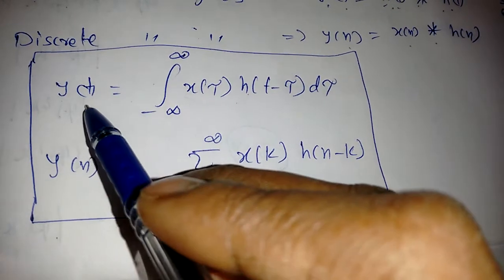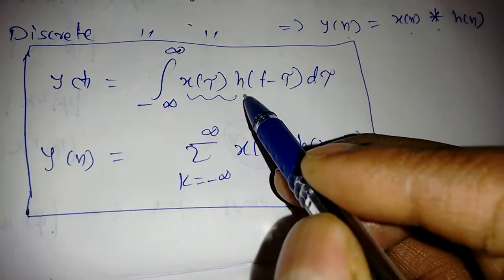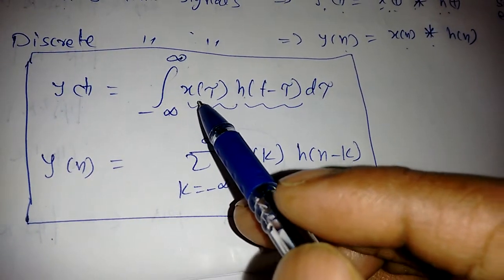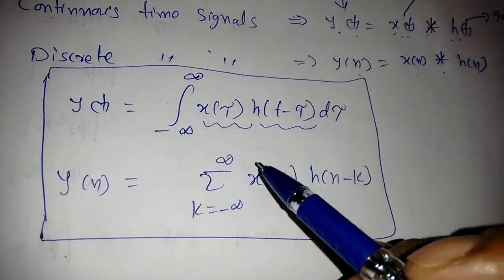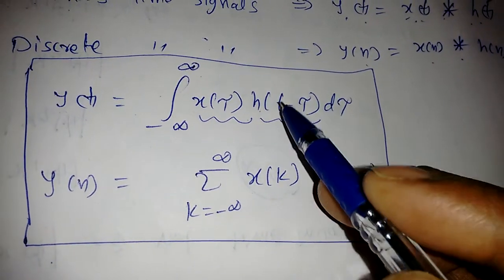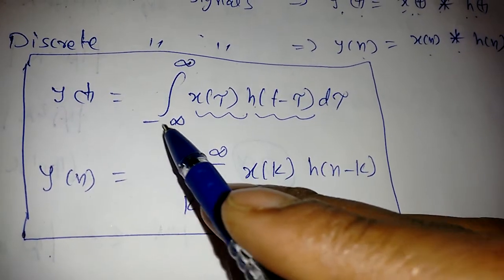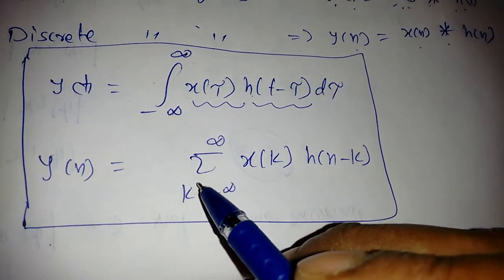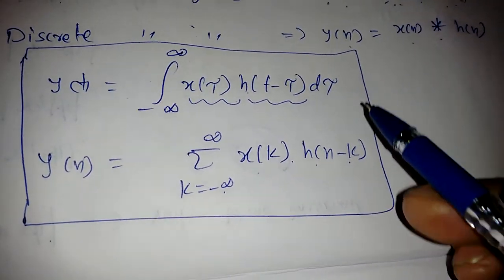For continuous-time signals, Y of T equals the integral from minus infinity to infinity of X of tau times H of T minus tau d-tau. There is a procedure for how this expression is derived, but just remember: we delay the impulse response and integrate from minus infinity to infinity with respect to d-tau. Similarly for discrete-time, Y of N equals the summation from K equals minus infinity of X of K times H of N minus K.